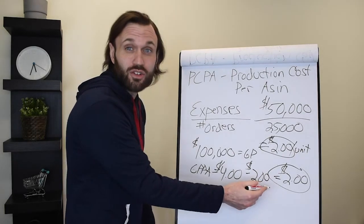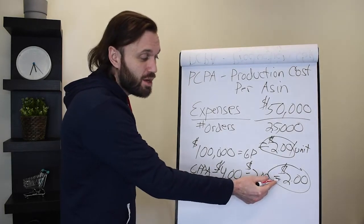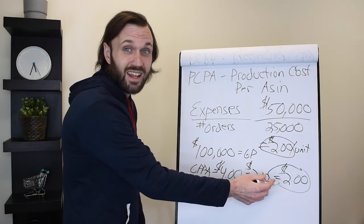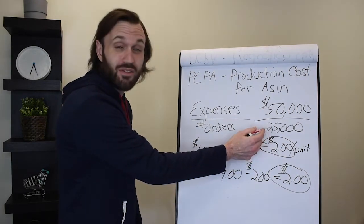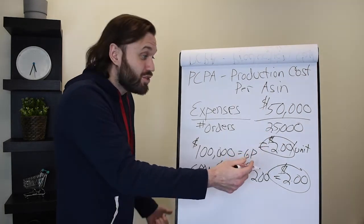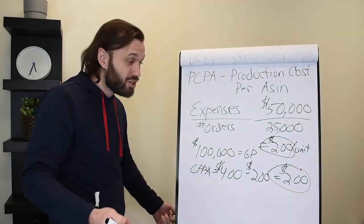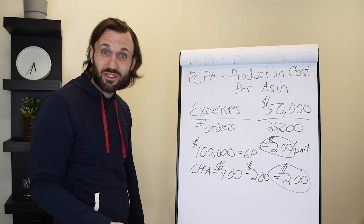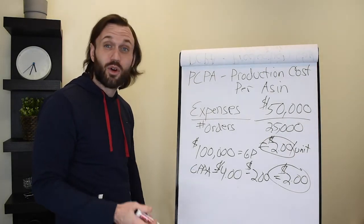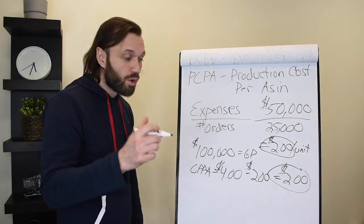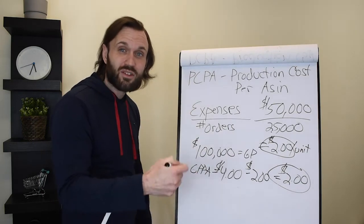So this $2 in net profits is actually pretty healthy. Because if you're doing $2 per ASIN on average, times 25,000 orders, that means your net profit after all your expenses is $50,000 a month. That's huge. That's $600,000 a year. That's phenomenal.